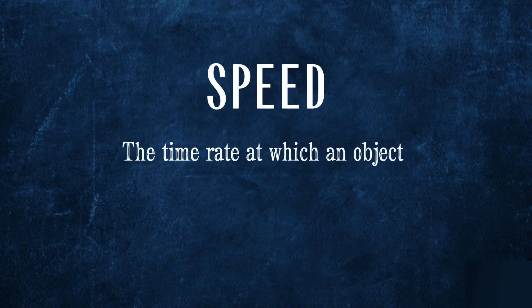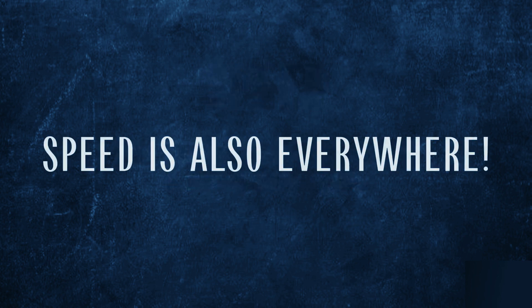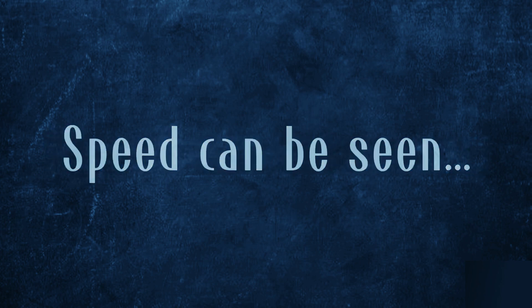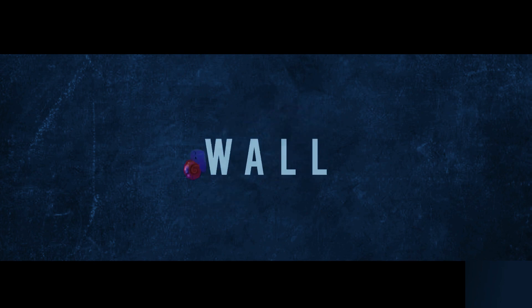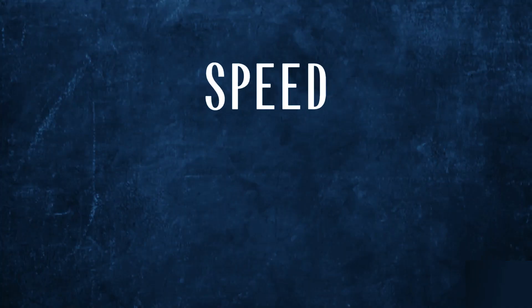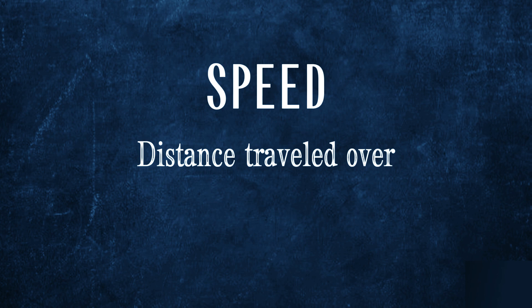Speed is the time rate at which an object is moving along a path. Just like motion, speed can also be seen everywhere. Speed can be seen through a propeller of an electric fan or a snail climbing up a wall. Speed is calculated by dividing the distance traveled by the elapsed time.